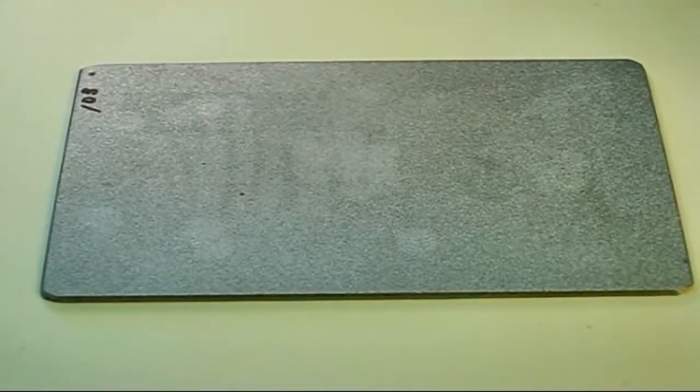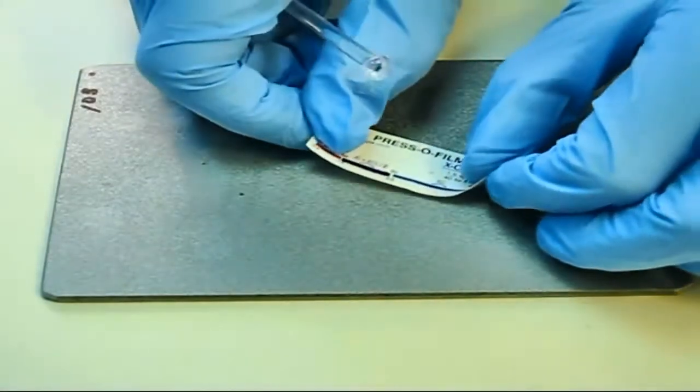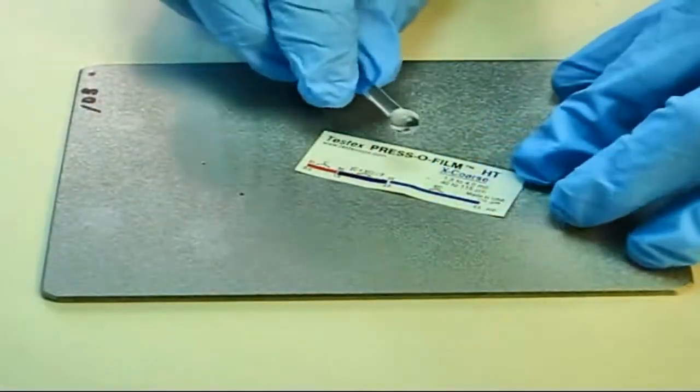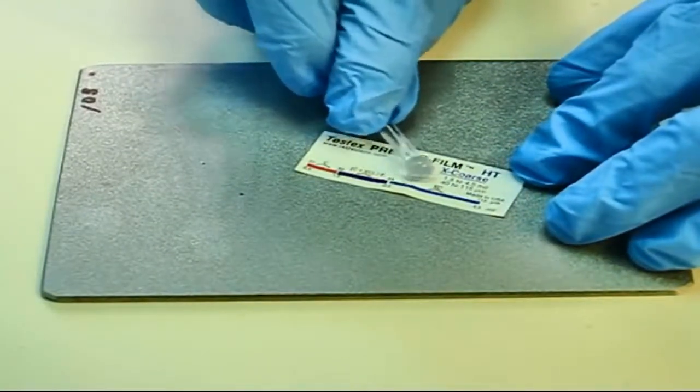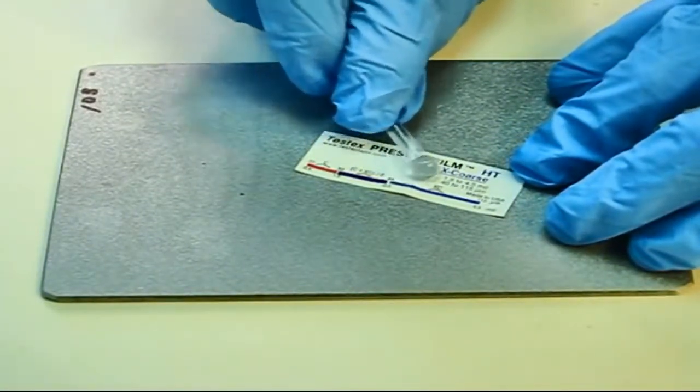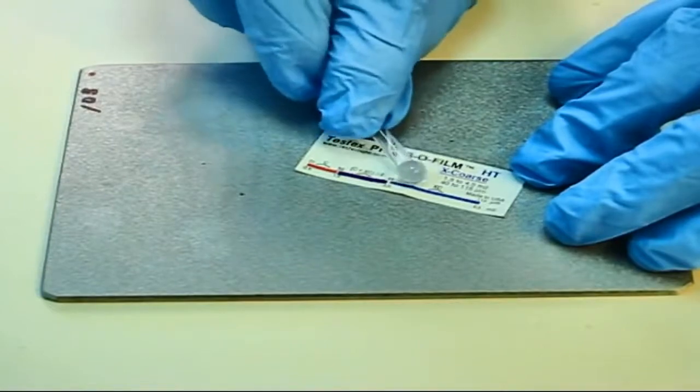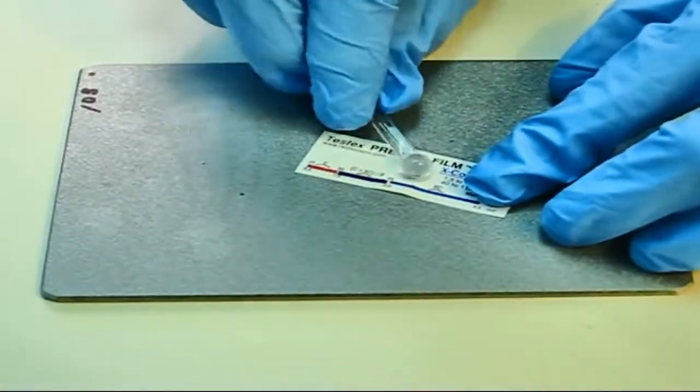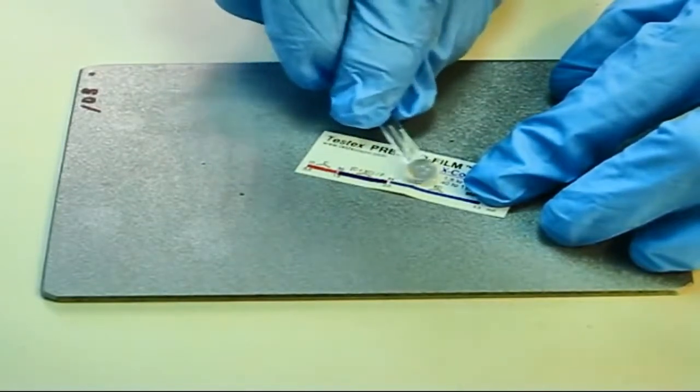Apply the tape to the blasted surface. Press the adhesive-backed paper to hold it securely in place. Firmly compress the replica tape with the smoothest surface on the rounded end rubbing tool provided, applying sufficient pressure to produce a replica with a uniform pebble-grain appearance.